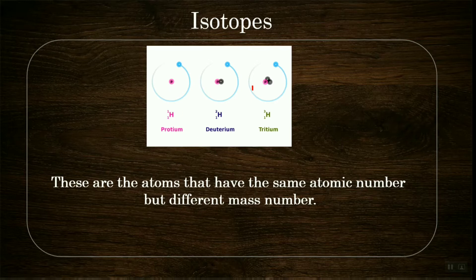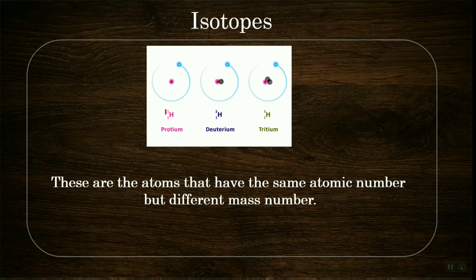As you can see in the picture, these are three different atoms of the same hydrogen element. The first one is protium, the second is deuterium, and the third is tritium. All three are hydrogen atoms, but what is the difference? The atomic number is 1, 1, and 1, but the mass number changes: protium has mass number 1, deuterium has mass number 2, and tritium has mass number 3.